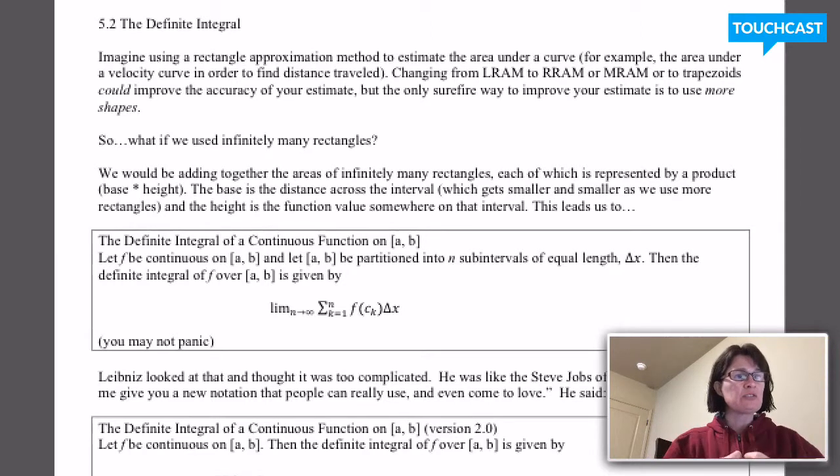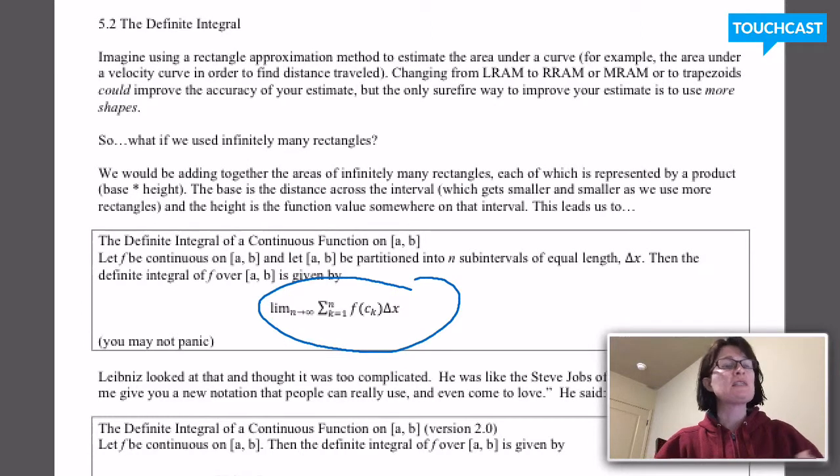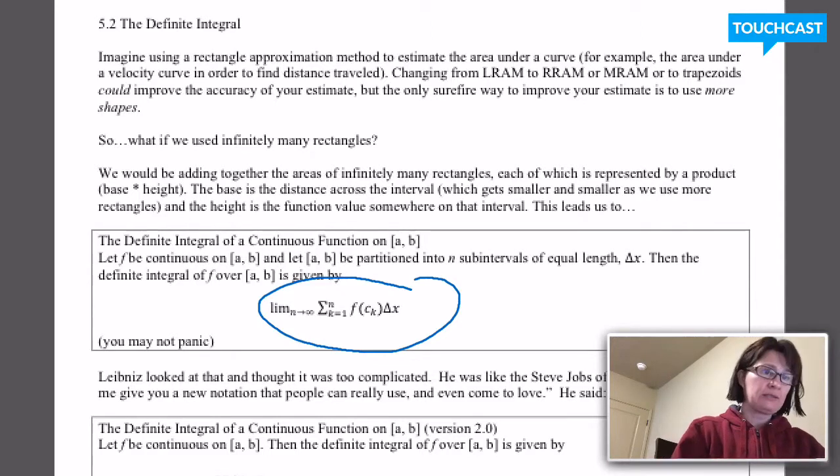So this is what the founders of calculus did, they decided that if they could use infinitely many rectangles, they would get an exact value for the area underneath a curve. And they wrote this notation that you see here to show that. So this is a little maybe distressing, this notation, so let me tell you what this means. We have here the part that looks like an E, that's the Greek symbol sigma, the Greek letter sigma, and it's been used historically in mathematics to add up a bunch of things. So that's what we want to do, we want to add up a bunch of areas of rectangles.